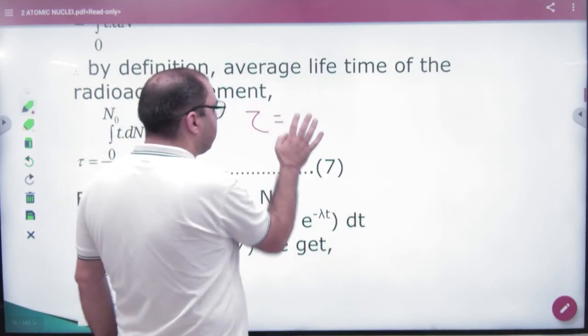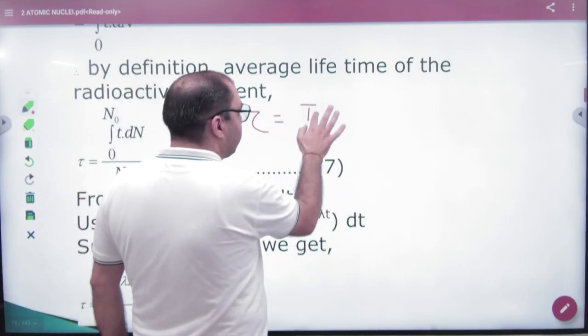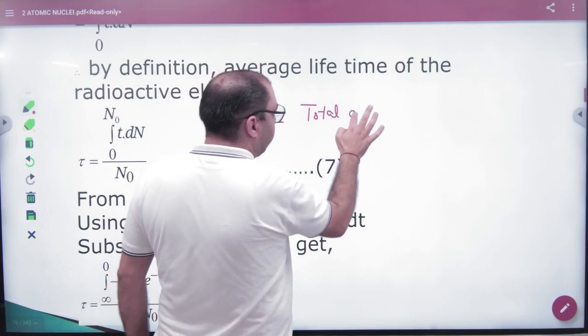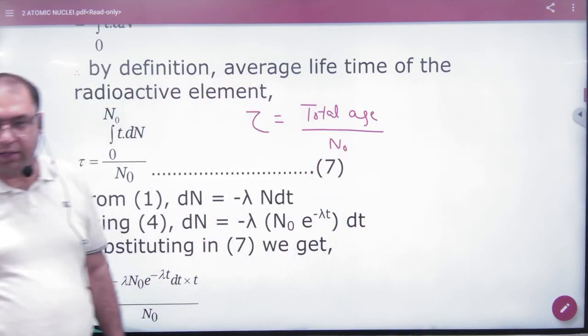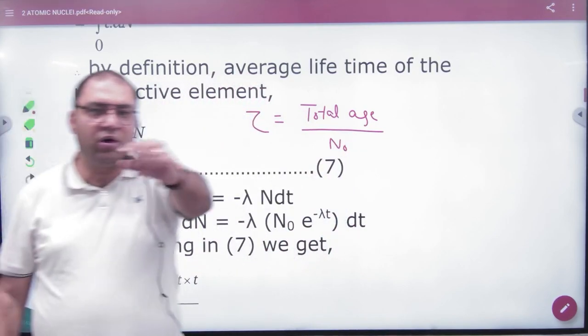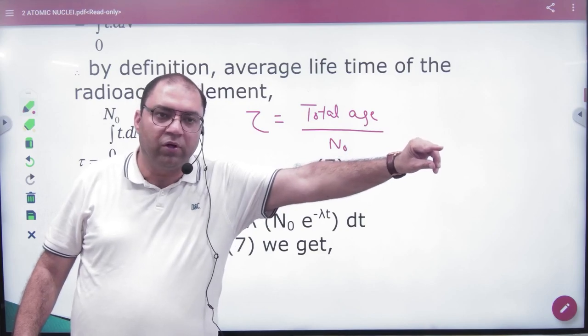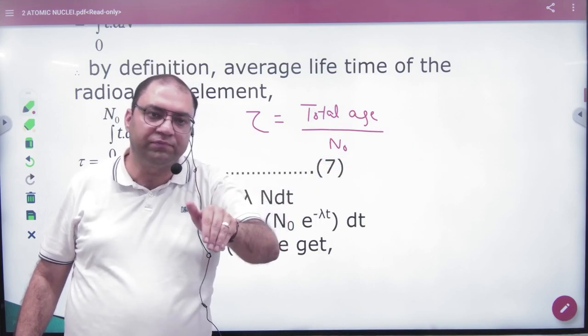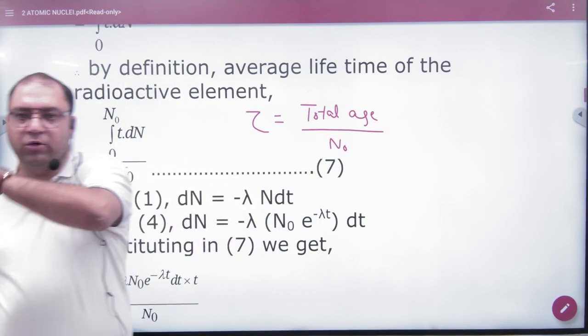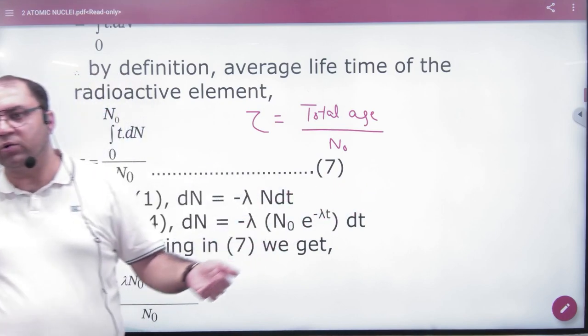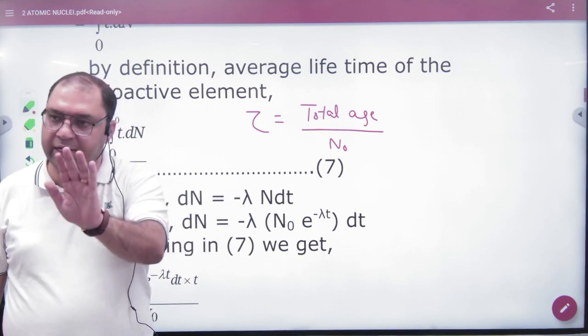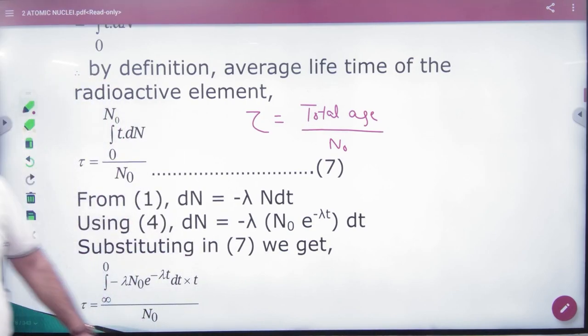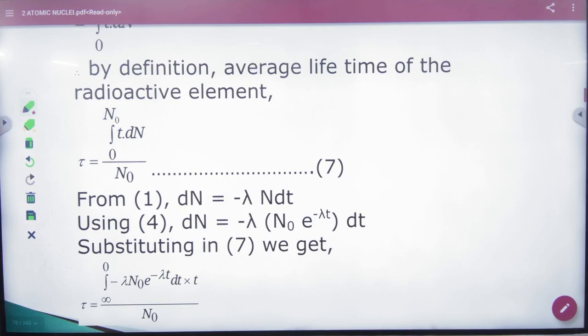We represent the average age from tau. How do we calculate the average age? We will calculate the total age of all atoms divided by the number of atoms that were initially present. So if I tell the total age, I will tell the total age of each atom. We will do that. So if I tell the total age of all atoms, divided by the total number of atoms, I will divide each atom, then the average age of each atom will come. Is it clear here? So how does age come out? How does total age come out? Let's see.